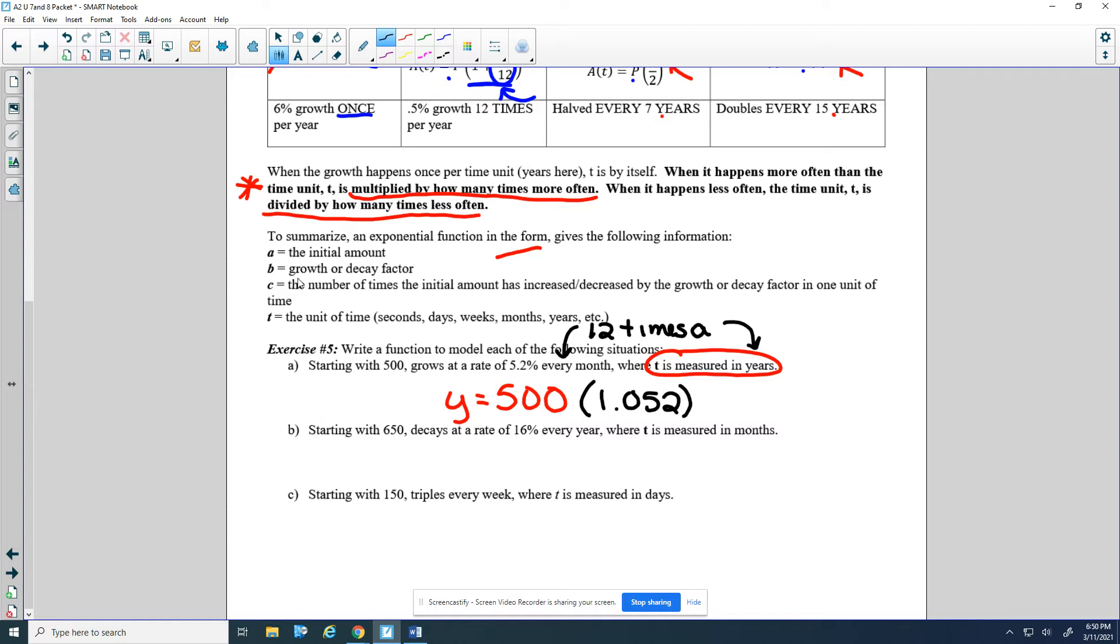So even though we know the monthly growth rate, we have to rate it with years. We're going to need to get this 12 times a year. It's happening more often than a year. It's happening monthly, so I do 12t.